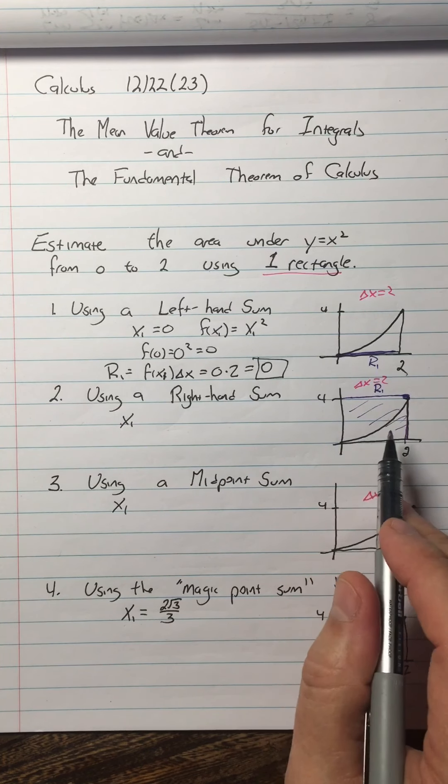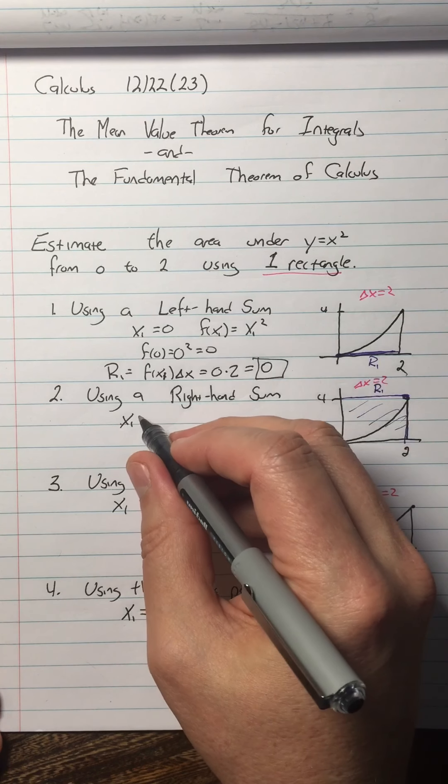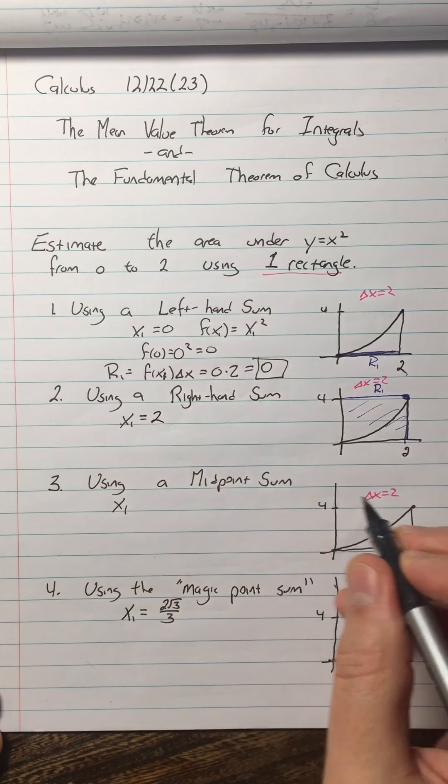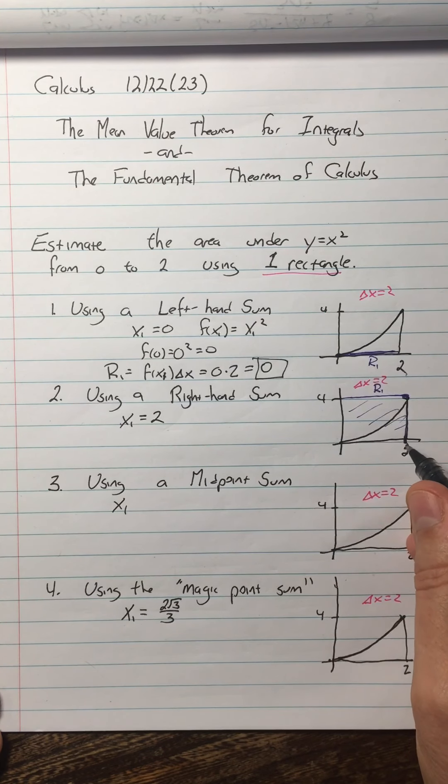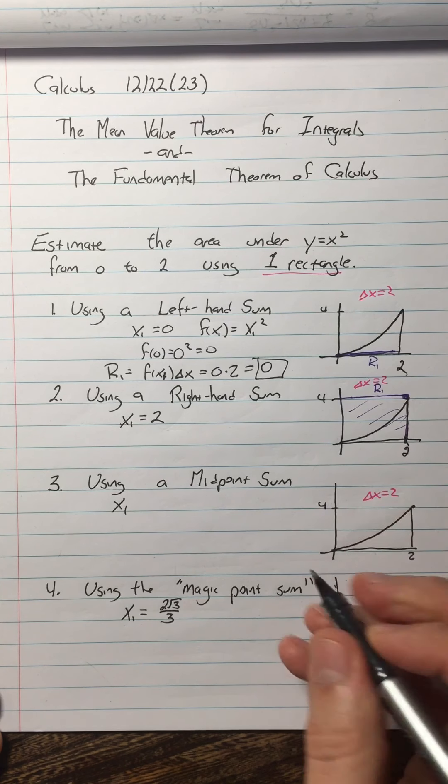Our right-hand sum estimate is obviously 8. But just to really look at where that came from, x sub 1 is 2 this time. So we only have one x sub i. So we're calling it x sub 1. It's 2.